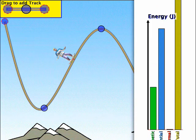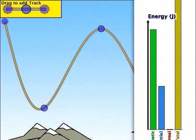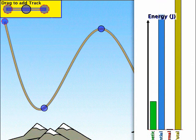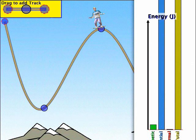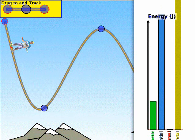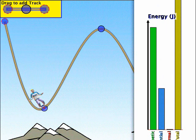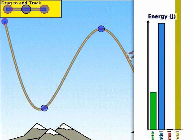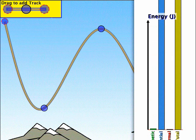We can show a similar concept with a bar graph, with total energy in yellow remaining constant, and kinetic and potential changing back and forth.